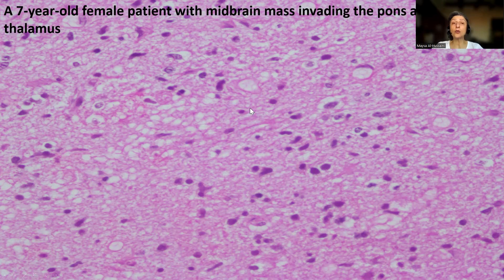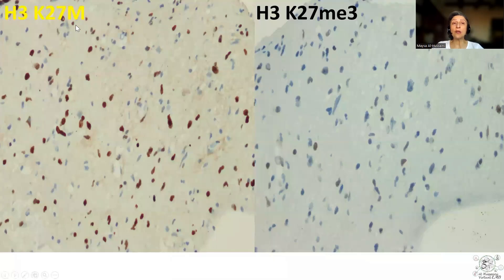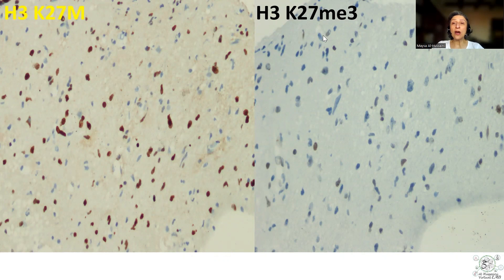Let's see how the stains help us in this context. The H3K27M shows positive nuclear staining in the tumor cell nuclei in the presence of a negative internal control — the endothelium as well as the pre-existing standby glial cells — while the trimethylation shows negative staining in the tumor cells in the presence of a positive internal control. Together, both support the diagnosis of diffuse midline glioma, H3K27-altered, WHO grade 4, regardless of the histologic grade.